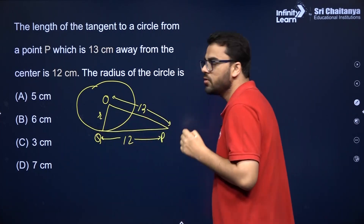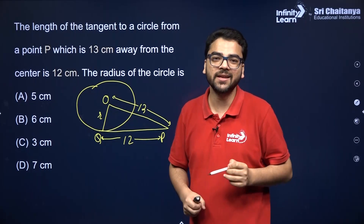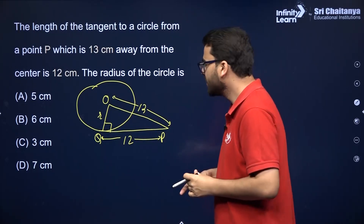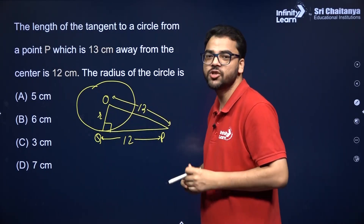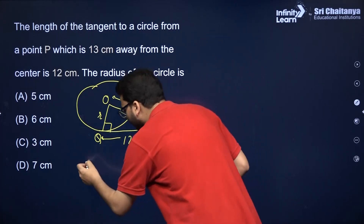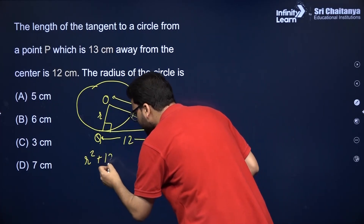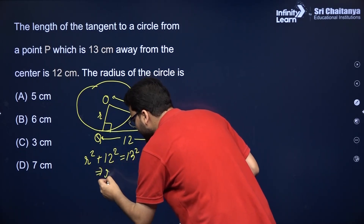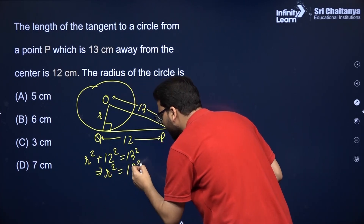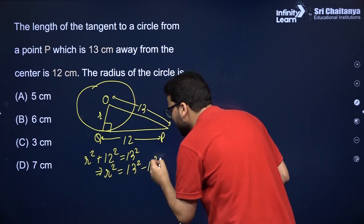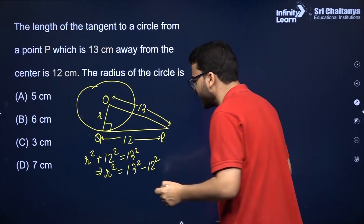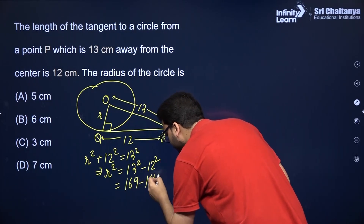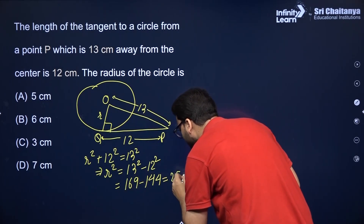You have to find the radius. You know that the tangent to a circle is perpendicular to the radius through the point of contact, so this angle will be 90 degrees. This is a right-angle triangle in which you can use the Pythagorean theorem. So R² plus 12² equals 13². This is a very famous Pythagorean triplet. So this gives 169 minus 144, which is 25, which is 5².